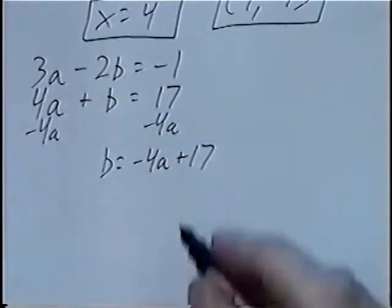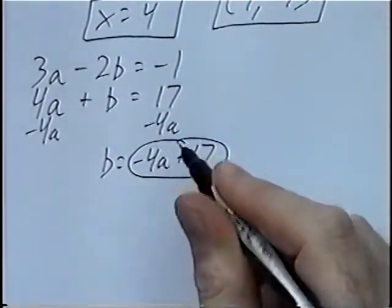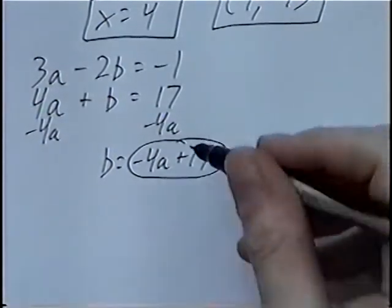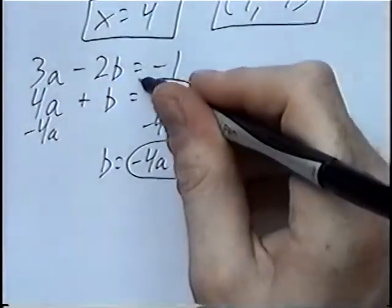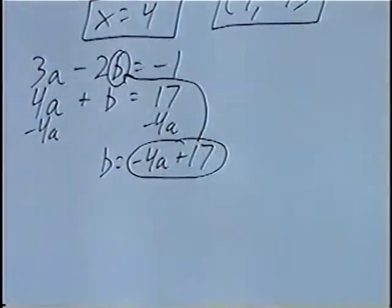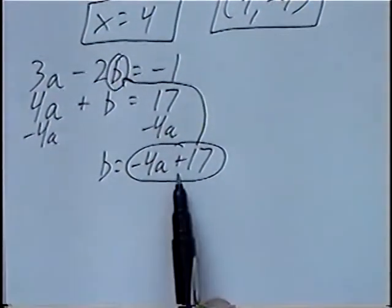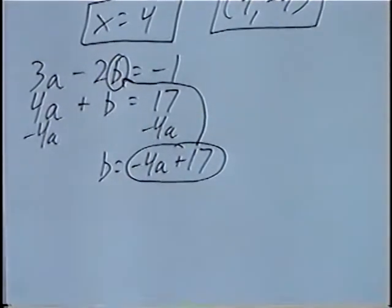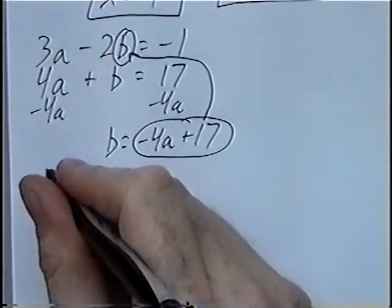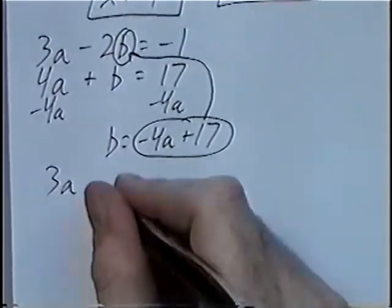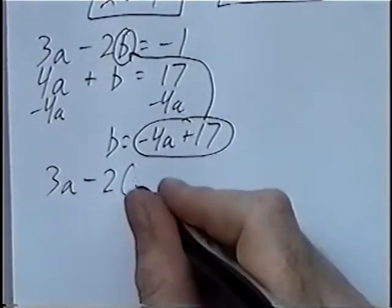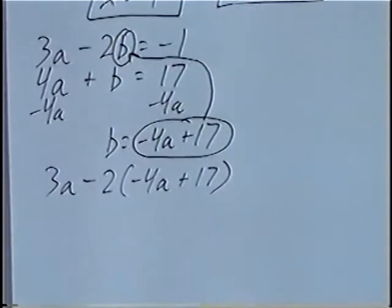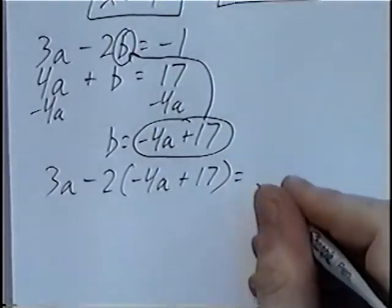By substitution, b equals negative 4a plus 17. We used the second equation to come up with this expression, so we'll plug this into the first equation that we did not use. Solving the first equation: 3a minus 2, and instead of b we'll substitute negative 4a plus 17, and equals negative 1.